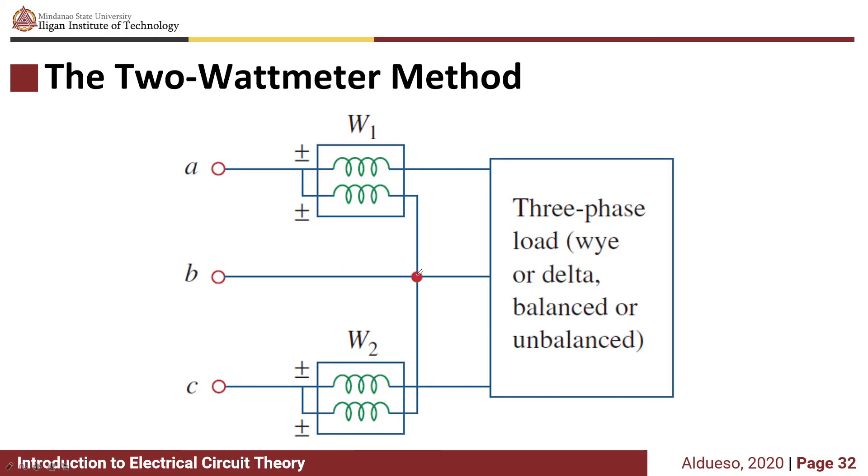You can choose any reference line. In this case the reference is line B. If you choose to have the reference at line C, you must switch wattmeter 2, connect it here and place it there.